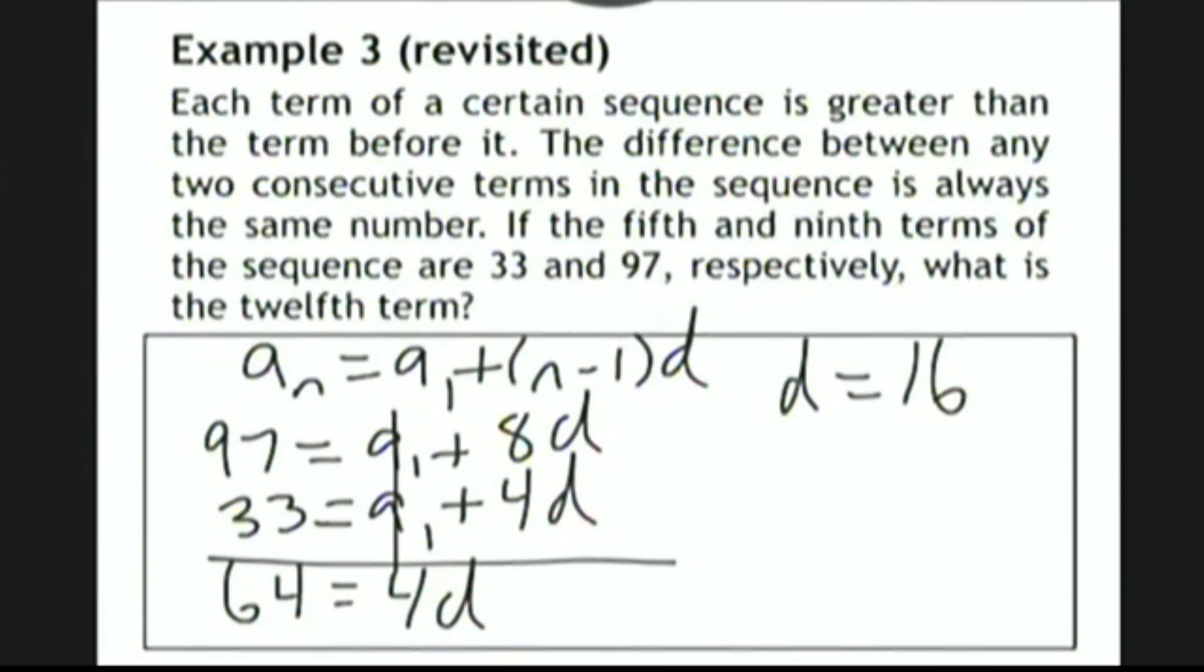And once again, since we have the ninth term of the sequence as 97, to get to the twelfth term, we're going to add the common difference 3 times, which is equivalent to adding 16 times 3, and that comes to 145 as before.